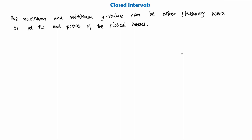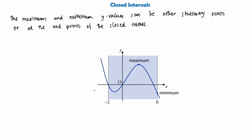I'll show you with a graph now what we mean by a closed interval. So here we have a sketch of a curve, and on it we have labeled a few things. The first thing is we have the maximum point up here. But why is this the maximum point? Well, it is the greatest y value on the curve, which is between these two dotted lines that meet at minus two on the x-axis and six on the x-axis. These dotted lines are simply restricting the graph, so it must be in between here. And this is called a closed interval.